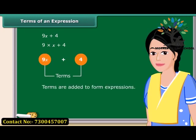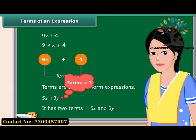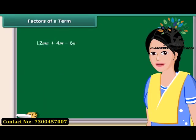How many terms are there in 5X plus 3Y? That's right. It has two terms. A term is a product of its factors.